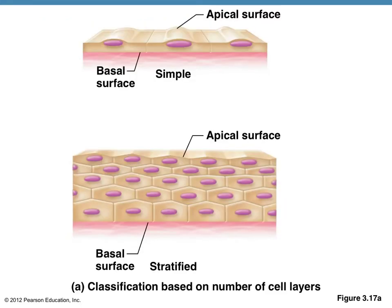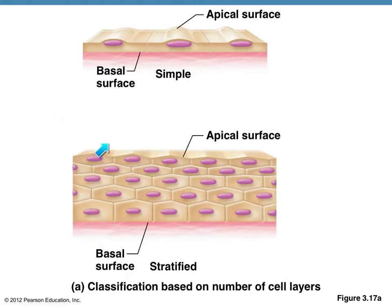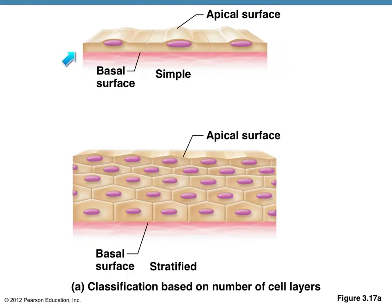This diagram shows you epithelium and the difference between the apical surface, which is the free edge — there's nothing out here but space. Think about your skin: there's the edge, just space outside of the body. The basal surface or basement membrane would be found right there. This is a single layer, and here is a multi-layered epithelium.